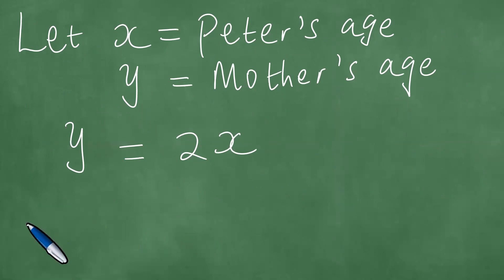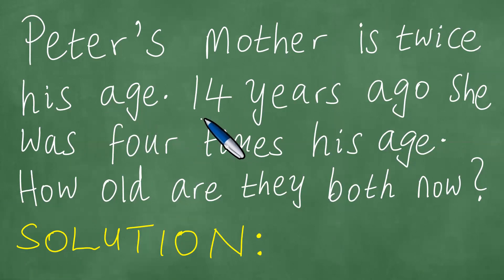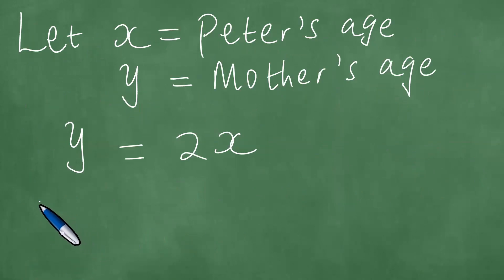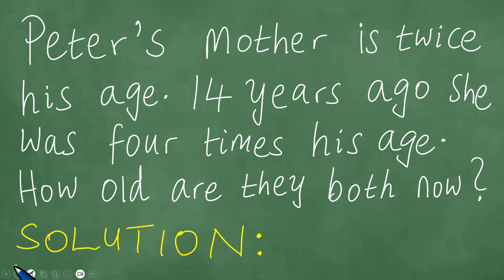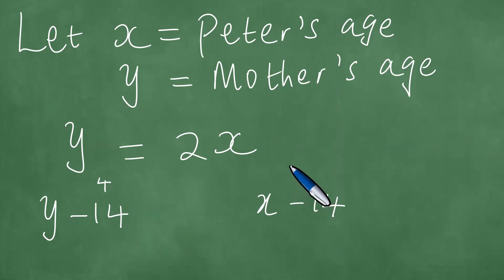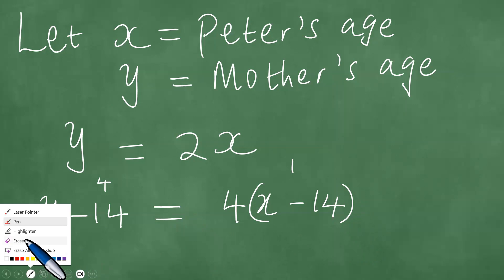Now we proceed to break down the second part of the question. 14 years ago, she was four times his age. So if you go back 14 years, which means we'll say y minus 14 and also x minus 14. She was four times his age, therefore we multiply the right hand side by four and put an equality there: y - 14 = 4(x - 14).